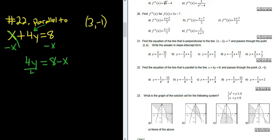And then just divide by 4. So we get y equals 8 over 4 is 2, minus 1 fourth x. You can rearrange this as minus 1 fourth x plus 2. That's mx plus b form.